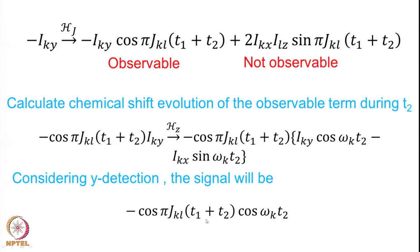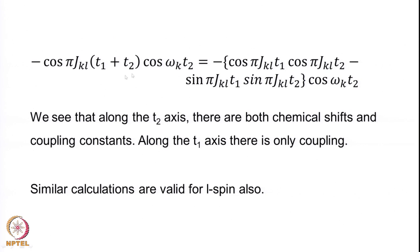Expanding cos(πJ(T1+T2))·cos(ωK·T2), we see that along the T2 axis there are both chemical shifts and coupling constants, whereas along the T1 axis there is only coupling. The same kind of calculation applies to the L spin, where you will have ωL instead of ωK. Assuming the chemical shift of K is 0, the signal becomes cos(πJ(T1+T2)), which expands as cos(πJT1)·cos(πJT2) minus sin(πJT1)·sin(πJT2).